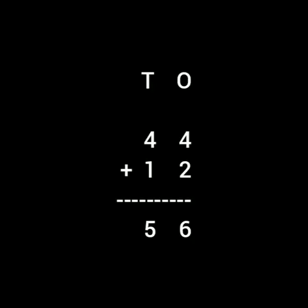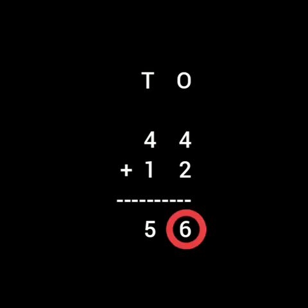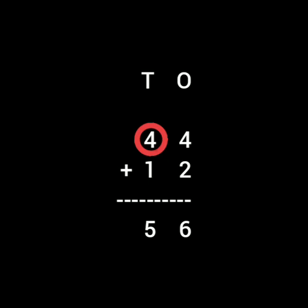Now let us see the next example: 44 plus 12. We start from the ones side, so 4 plus 2. On one hand take out 4 fingers and on the other hand 2 fingers. Count them together: 1, 2, 3, 4, 5, 6. So the ones answer is 6. Now let us see the tens column: 4 plus 1. Take out 4 fingers and 1 more. Count them together: 1, 2, 3, 4, and 5. So the total answer is 56. Means 44 plus 12 equals 56.